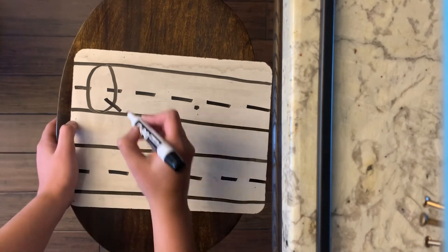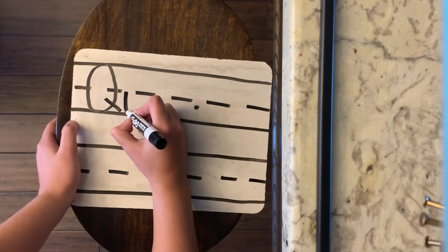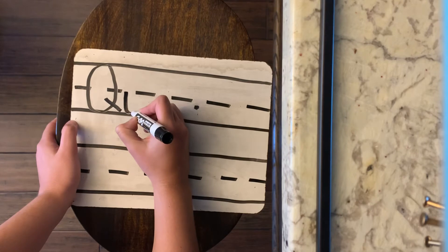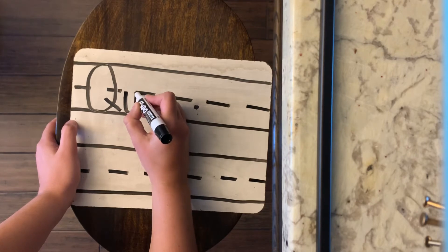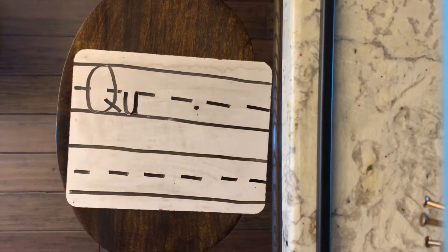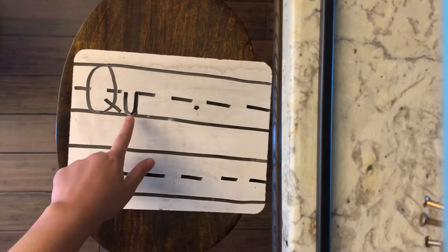So Q and then let's do lowercase u. So we're going to start at the dotted line, loop down, come up, and stick to the bottom. So Q, U.